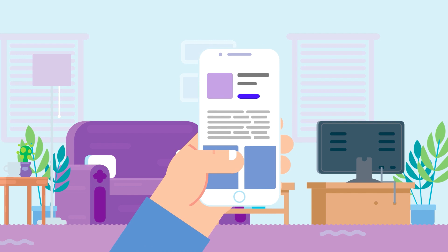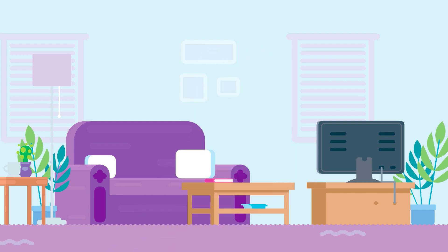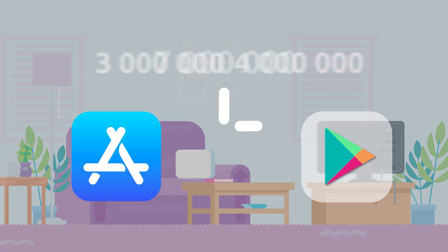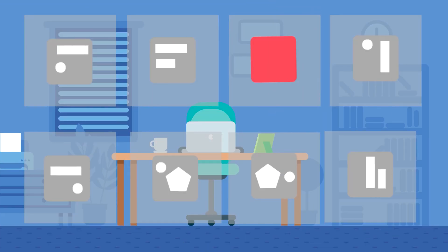A good-looking app icon is a crucial part of your App Store optimization. With more than 7 million apps on both the iTunes Store and Google Play, developers have less and less time to grab users' attention in search. When users browse the App Store, an app icon is the first visual trigger to discover more about your app.